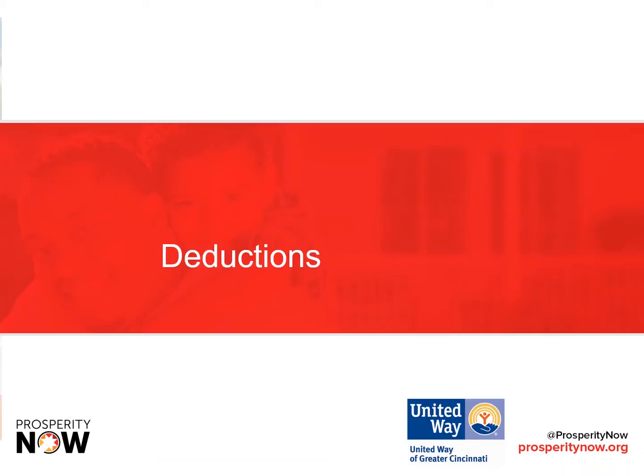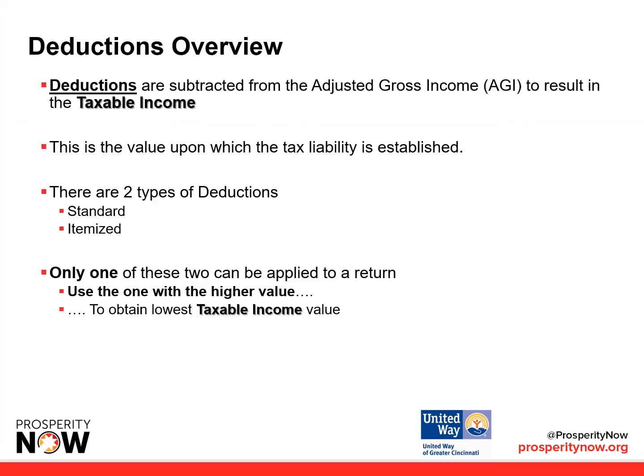Let's talk a little bit more about deductions. Deductions are subtracted from AGI to result in taxable income — this is the value upon which the tax liability is established. There are two types of deductions: standard and itemized. Only one of these can be used on the return.